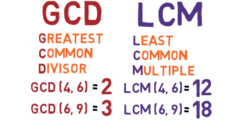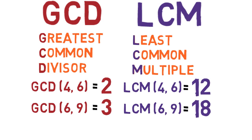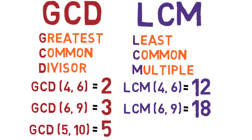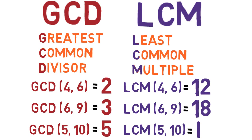Here's one final example. What is the GCD of 5 and 10? The answer is 5, because 5 is a factor of 10, so it's the greatest common divisor of 5 and 10. Now, can you find the LCM of 5 and 10? It's 10, because 10 is the smallest number that's a multiple of both numbers.